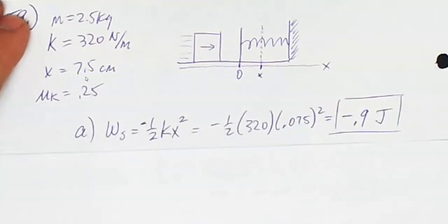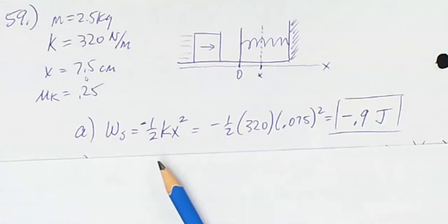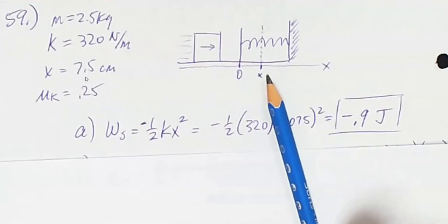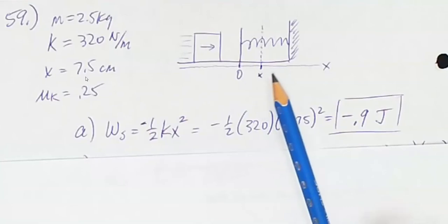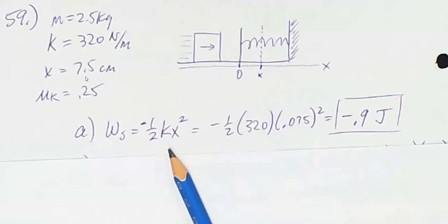Part one, what is the work done by the spring? Well, there's two ways of looking at this. You can say once the spring is compressed, I know it is storing some energy in it. How much energy is stored in a compressed spring? One-half kx squared. So the work done by the spring must be of that amount.